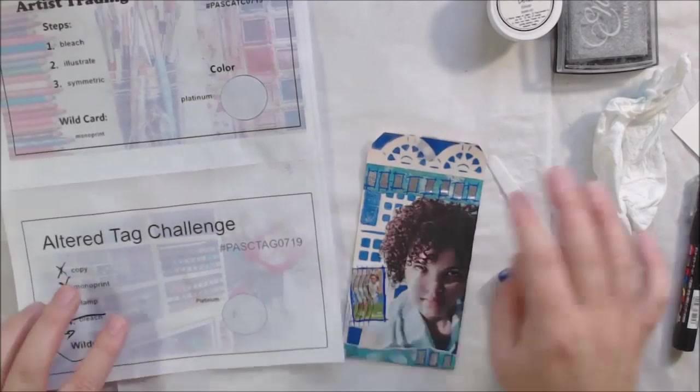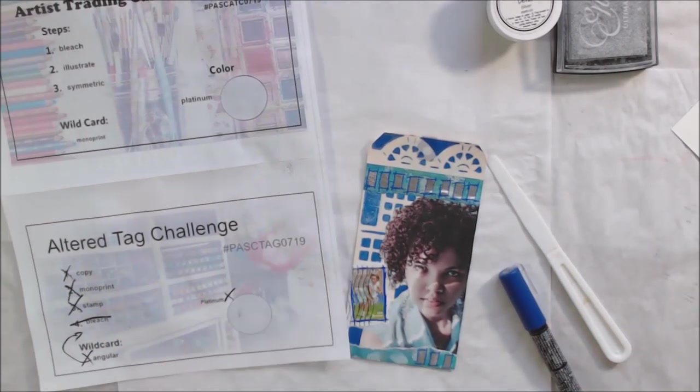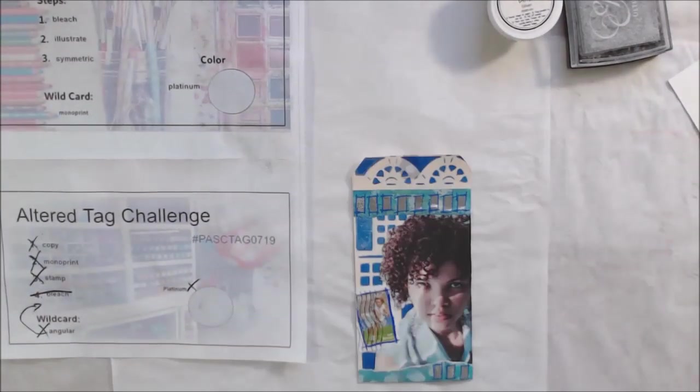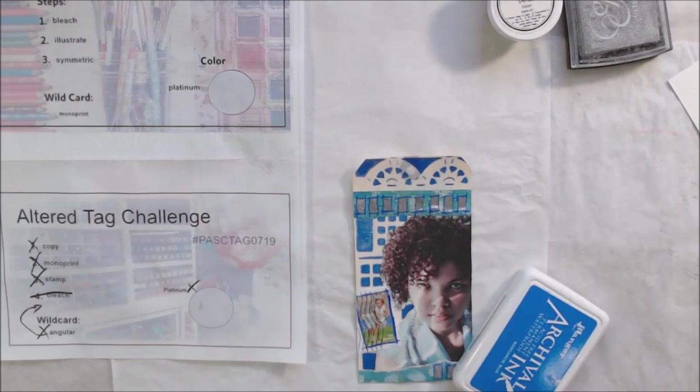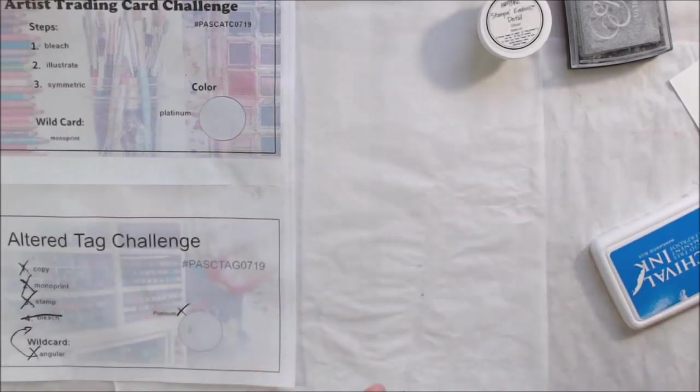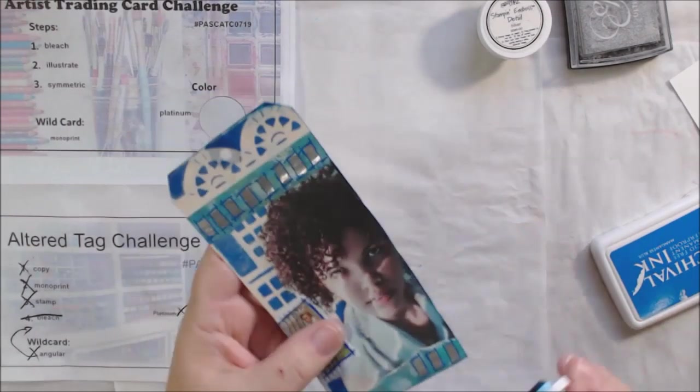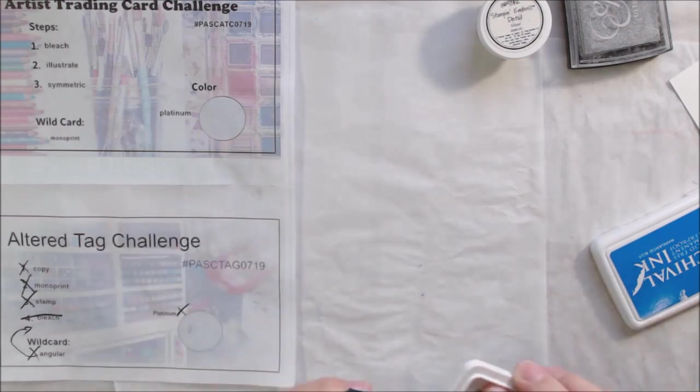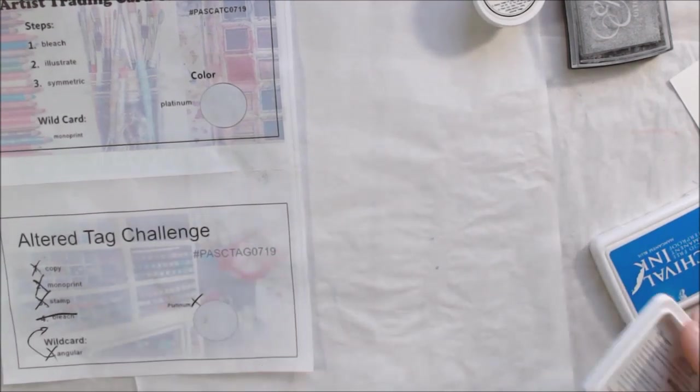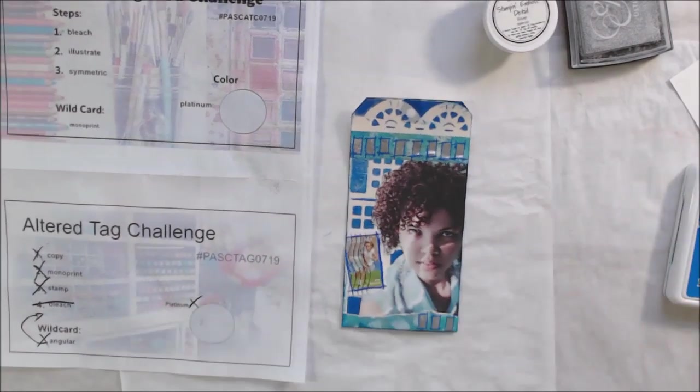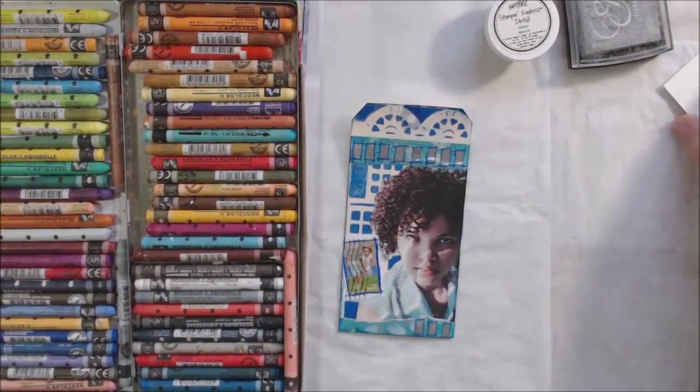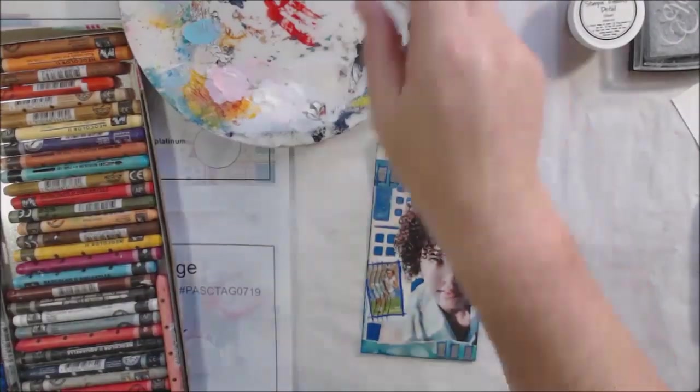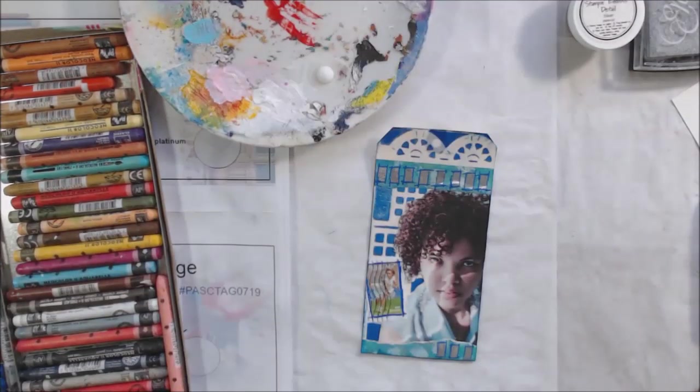I decided to not use the next one which is bleach, that was step four, and instead replaced it with the wild card angular. My shapes on this are all pretty angular with the exception of those curvy ones at the top - squares and rectangles. Then of course I stamped the rectangles and I decided to highlight those angular shapes with a blue Posca pen by just going around them and highlighting them for the prompt angular.